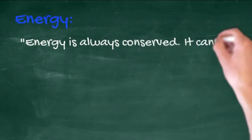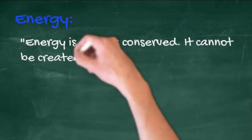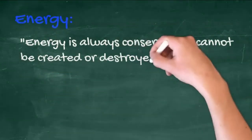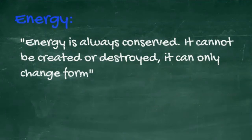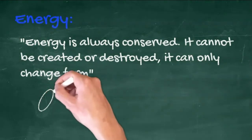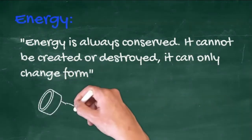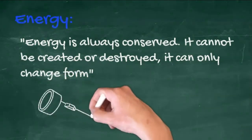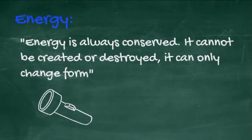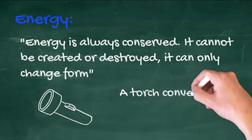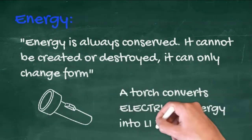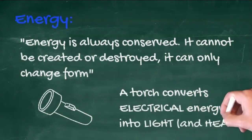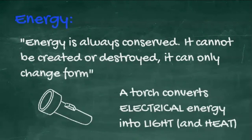Energy is always conserved — it cannot be created or destroyed, it can only change form. There are many examples; for example, a torch converts electrical energy into light and some heat.